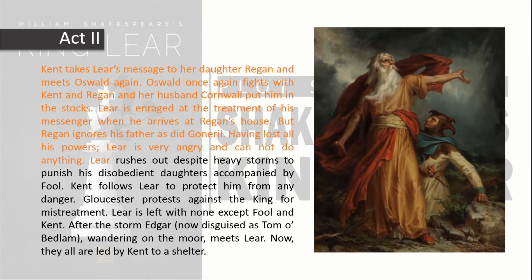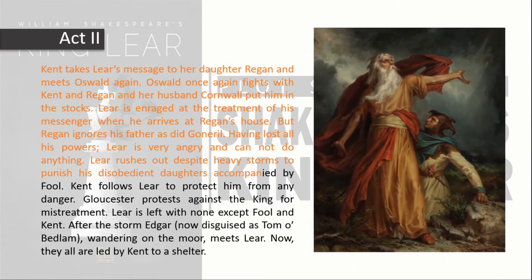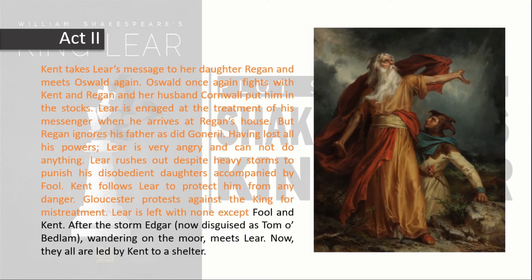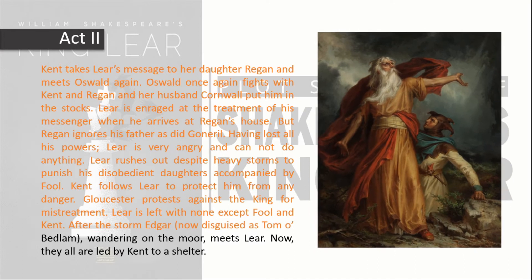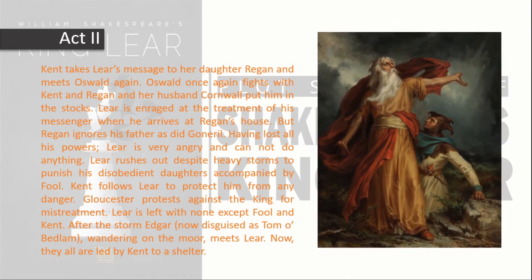Having lost all his powers, Lear is very angry and cannot do anything. Lear rushes out despite heavy storms to punish his disobedient daughters, accompanied by the Fool. Kent follows Lear to protect him from any danger. Gloucester protests against the king's mistreatment. Lear is left with none except the Fool and Kent. After the storm, Edgar, now disguised as Tom O'Bedlam, wandering on the moor, meets Lear. They are all then led by Kent to a shelter.